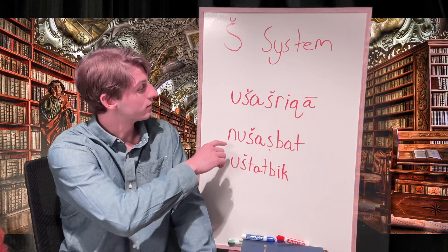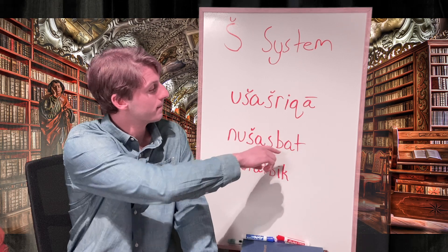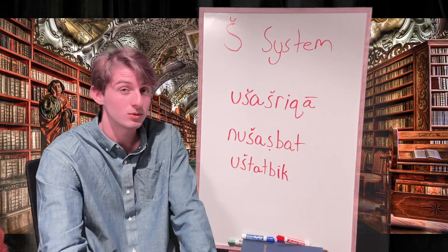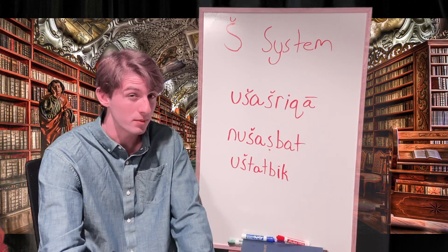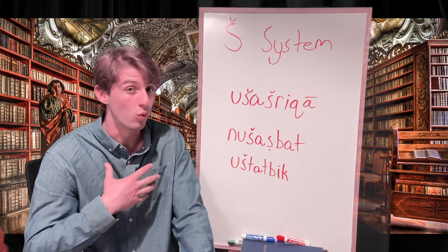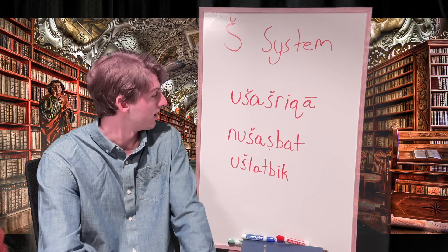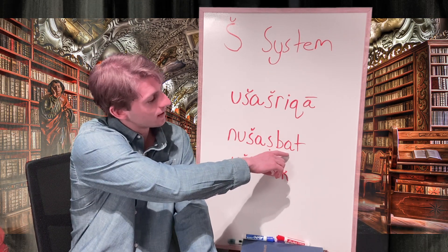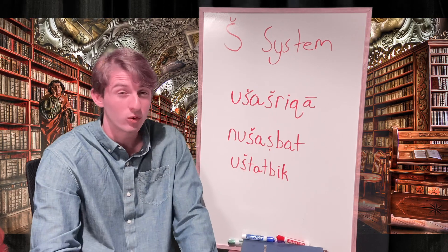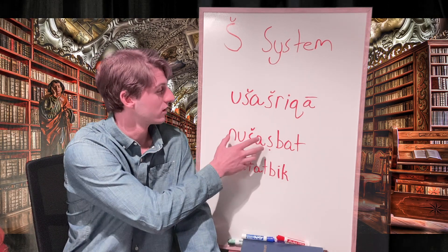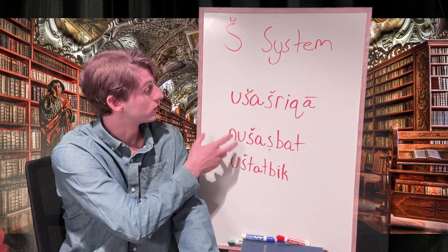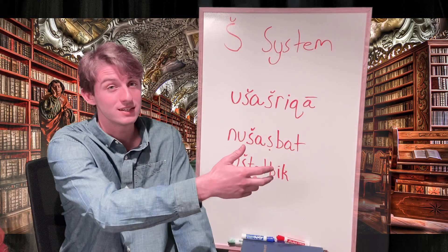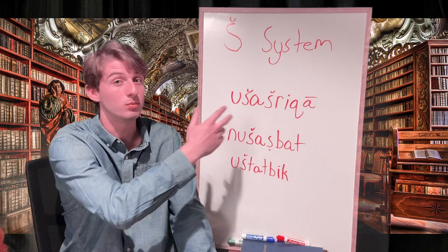Next we have nušatzbat. Based on the nu prefix, we know our subject is first person common plural 'we.' Based on the A which we find here, we can quickly identify this is in the durative tense, and we can translate this as 'we will help to seize' or 'we help to seize.'